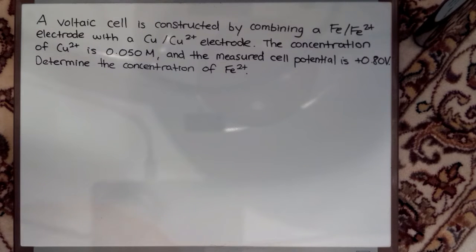Today I'm going to show you how to solve this pretty basic electrochemistry problem. I have a voltaic cell that's constructed by combining an Fe2+ electrode with a Cu2+ electrode. The concentration of Cu2+ is 0.050 mole per liter and the measured cell potential is positive 0.80 volts, and I'm asked to determine the concentration of the Fe2+ ions.